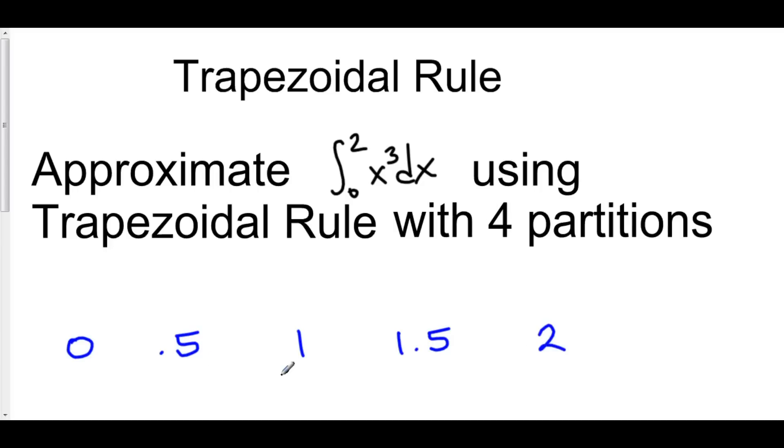Now we're going to have trapezoids going between each of these different partitions. So we're going to have 4 trapezoids here. And I like to create my trapezoids in the air, without any real graph around. So here's one trapezoid, let's call this another trapezoid, here's another trapezoid, and there's my last trapezoid right there.